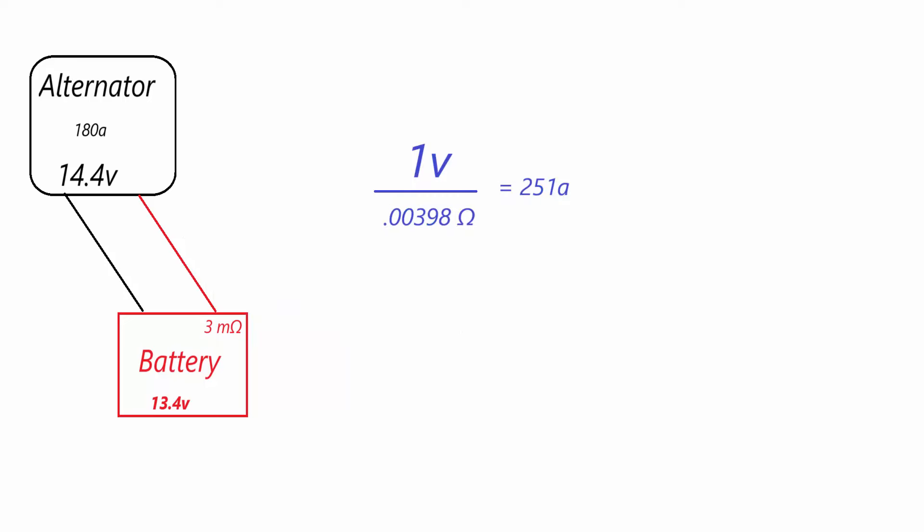Next, we take our 1 volt difference and divide it by the 3.98 milliohms. And that gives us 251 amps of current could potentially flow from the alternator to the battery. So in this example, with 180 amp alternator, we would be getting full use of the alternator and it would be able to send the maximum amount of current back.